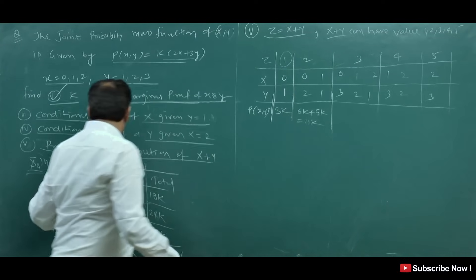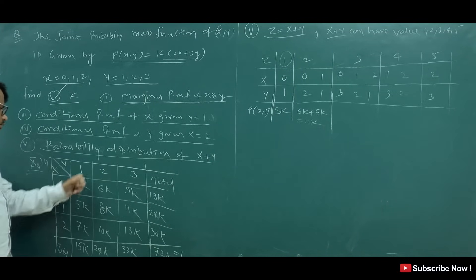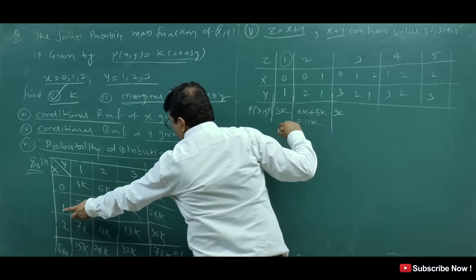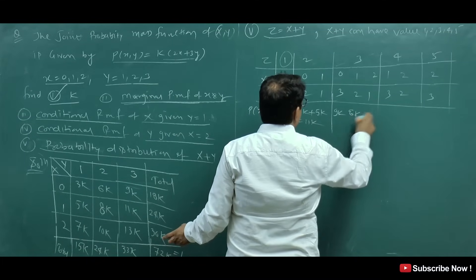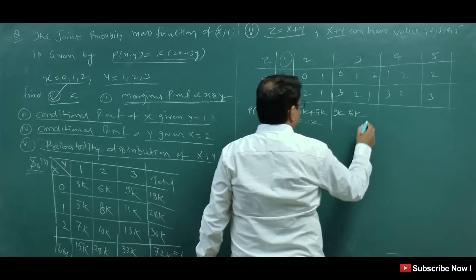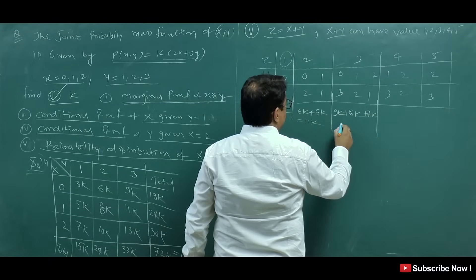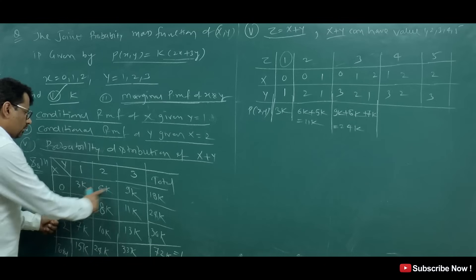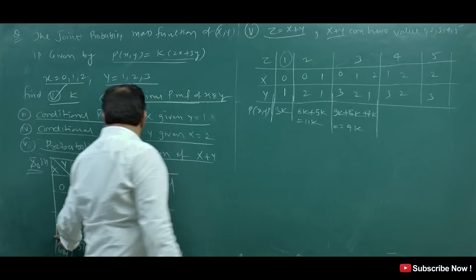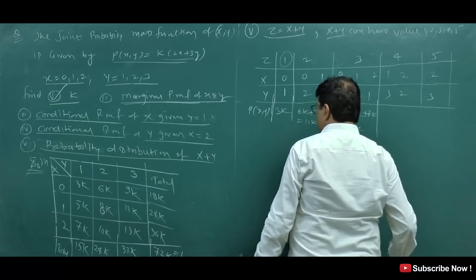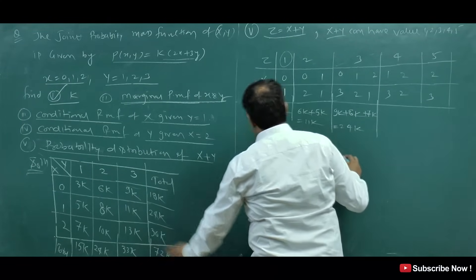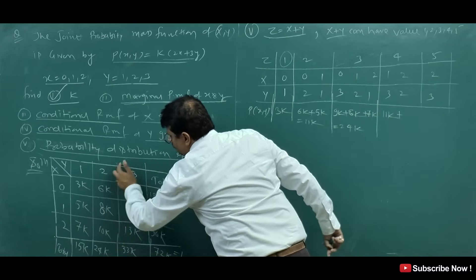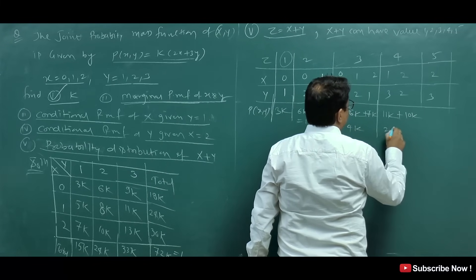For Z=4: cases are X=1, Y=3 giving 11K, and X=2, Y=2 giving 10K, total 21K. For Z=5: only case is X=2, Y=3 giving 13K. Now writing the probability distribution of Z equals X plus Y: Z values are 1, 2, 3, 4, 5 with corresponding probabilities 3/72, 11/72, 24/72, 21/72, and 13/72.